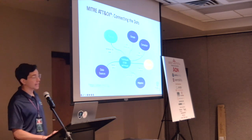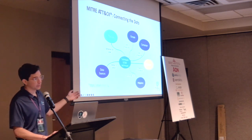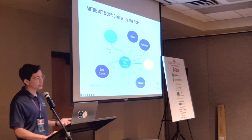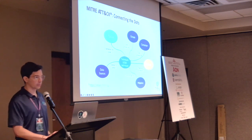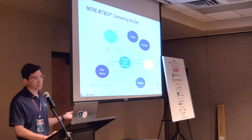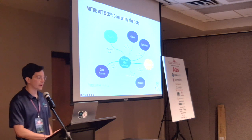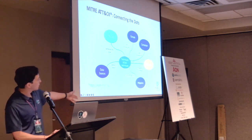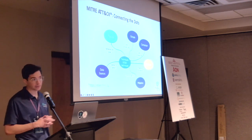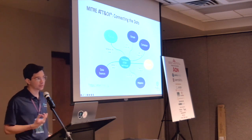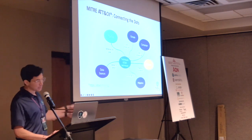MITRE ATT&CK connects all the dots. You have groups, campaigns, and software — those are the threats implementing procedures to achieve their goals and techniques. They also provide data sources describing how you can use telemetry sources to detect specific adversary behaviors. They also give examples with mitigations — controls like limiting access to privileged accounts — which reduces the attack surface, making it harder for adversaries to do privilege escalation.